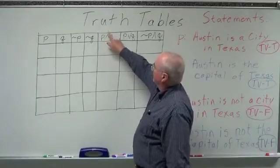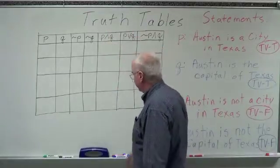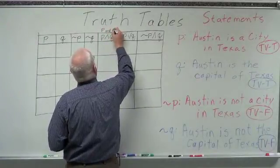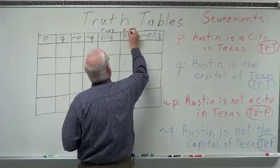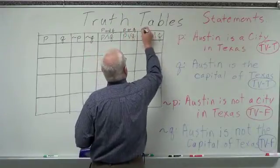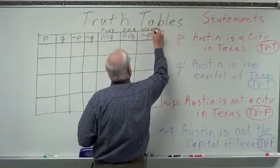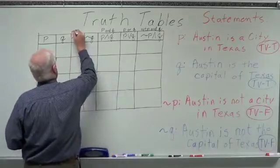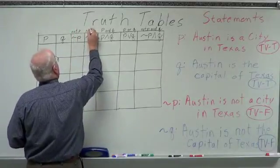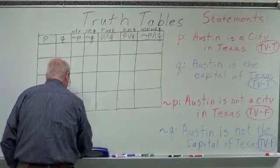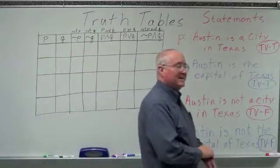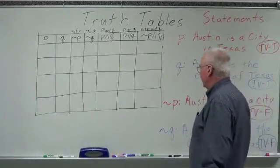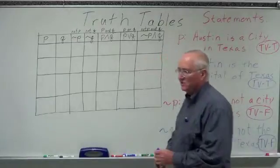'And' looks like this. 'Or' looks like this. Let's write those up here: this is P and Q, this is P or Q, this is not P and Q, and this is not Q. So let's look at a truth table — a way to organize the truthness and falseness of a statement.